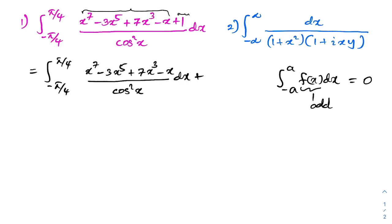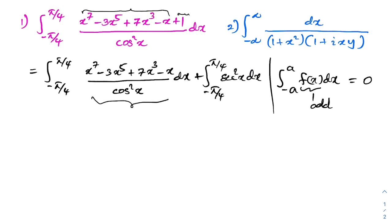Plus the integral from -5/4 to 5/4 of 1 over cosecant squared of x — actually secant squared of x — dx. It is clear that this first part is an odd function, so integrating it from -5/4 to 5/4 gives zero.